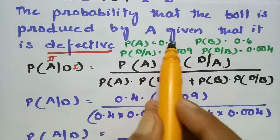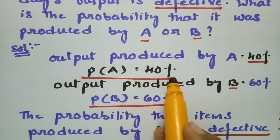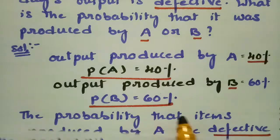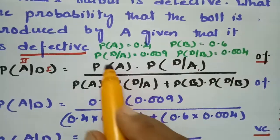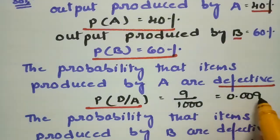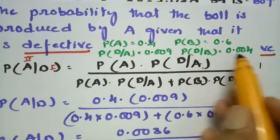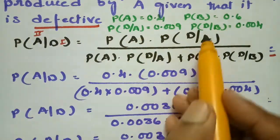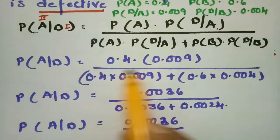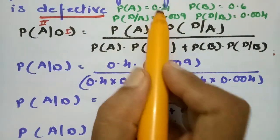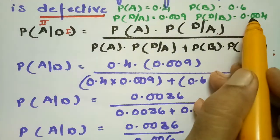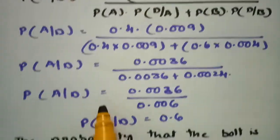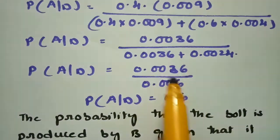We have all the values ready. P(A) = 40 percent, that is 0.4; P(B) = 0.6; P(D|A) = 0.009; and P(D|B) = 0.004. Substituting: P(A|D) = 0.4 times 0.009 divided by 0.4 times 0.009 plus 0.6 times 0.004.